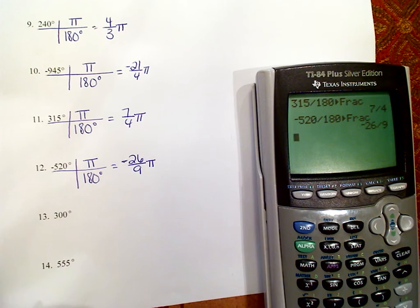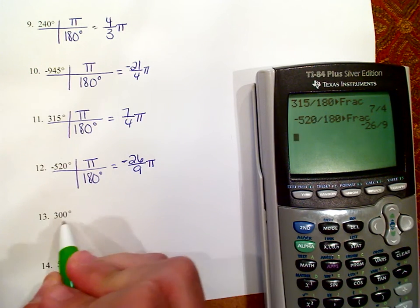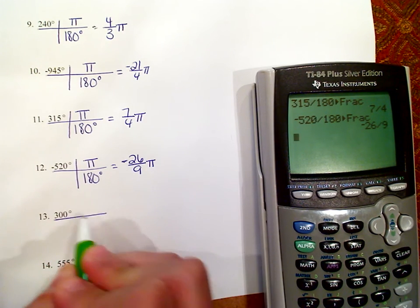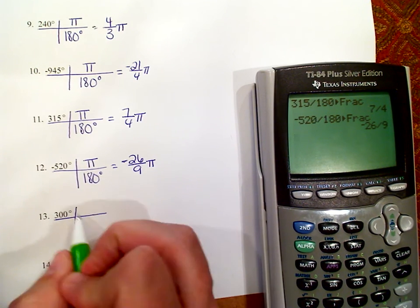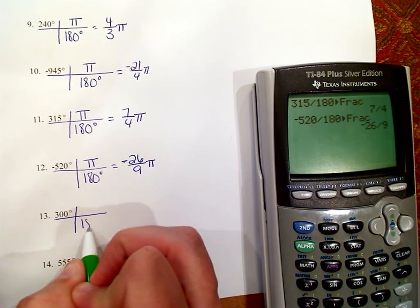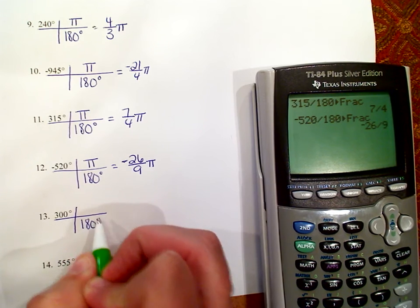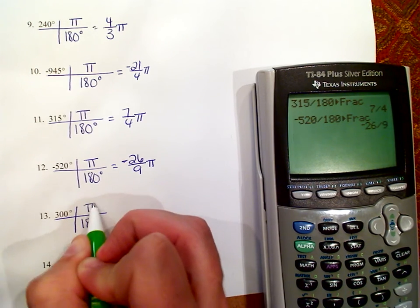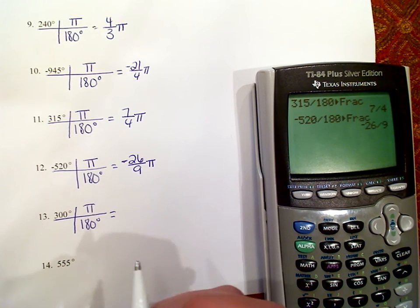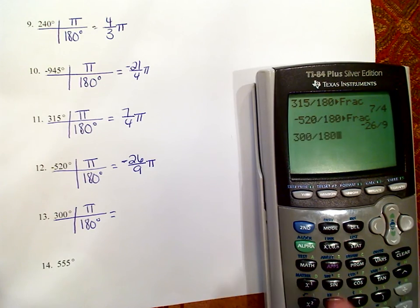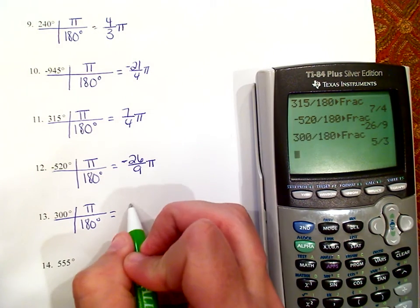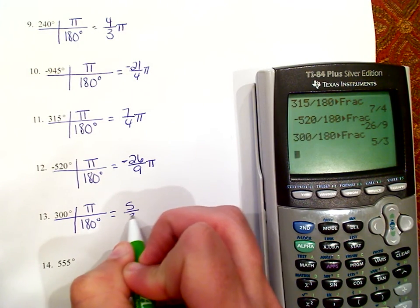Number 13 — 300 degrees. Degrees is on top, so we put degrees on the bottom, and we do 300 divided by 180, math, enter, enter — and that is 5 thirds pi.